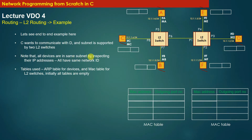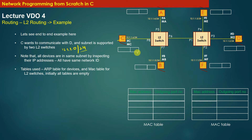Let us see an end-to-end example. Machine C wants to communicate with machine D and the subnet is supported by two L2 switches — one on the left hand side and one on the right hand side. All the machines — A, E, B, F, C, and D — are present in the same subnet, which is 12.1.1.0/24. The subnet is partitioned and supported by these two L2 switches.